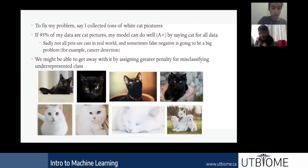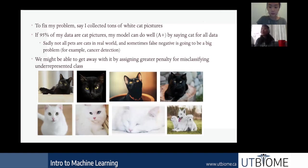If you try to use that kind of model in real life, it won't work well. Another scenario is an unbalanced class: if 95% of my dataset are cats and only 5% are dogs, my classifier might output correctly 95% of the time and I might think it's great — but in reality, it's just predicting everything as a cat because that's most of the examples.